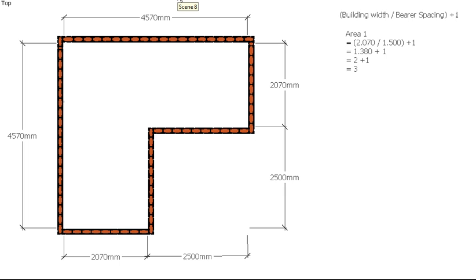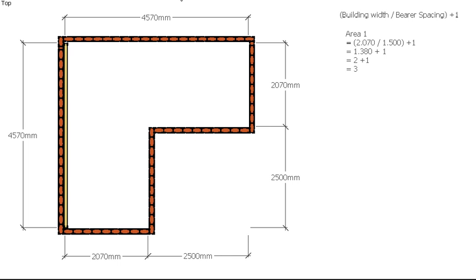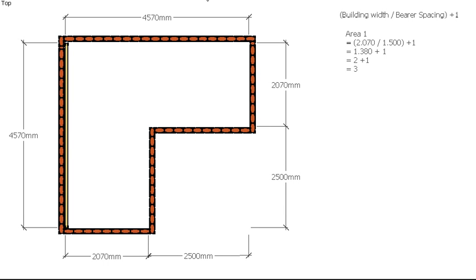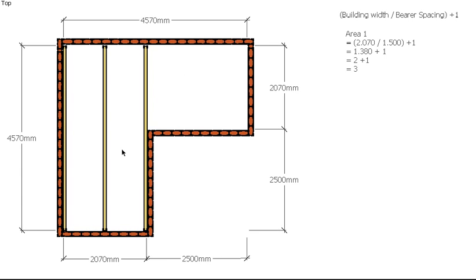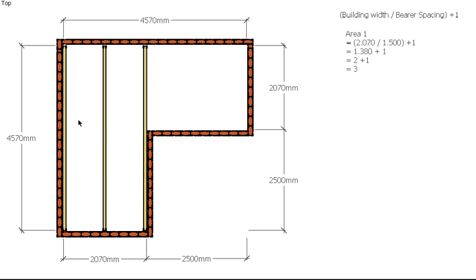Let's put the bearers in — there's one up against the wall, one in the middle, and you can see if we didn't add that extra one we'd be short a bearer on this wall. When we divide, we're only working out the spaces in between — we're not allowing 1 for the end — so we always have to add another 1. So there are my 3 bearers for that section, area 1.